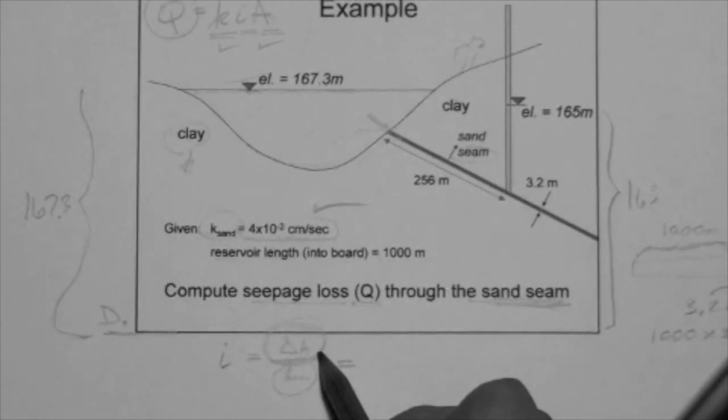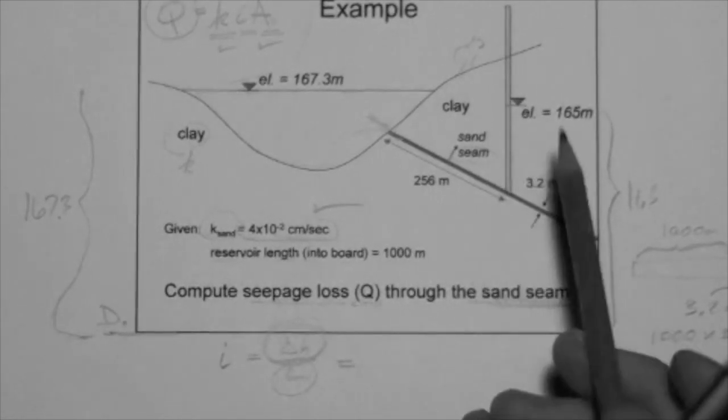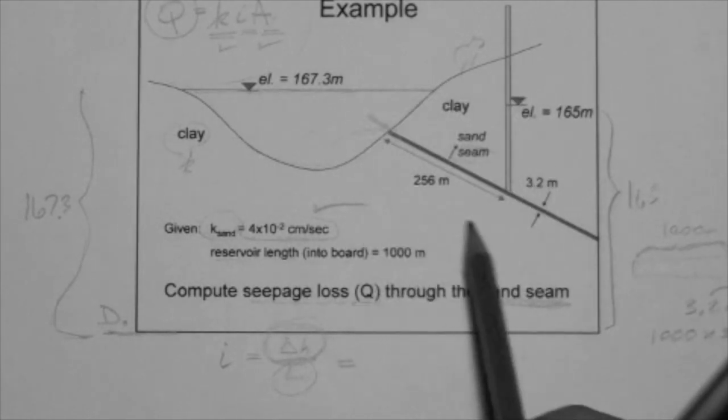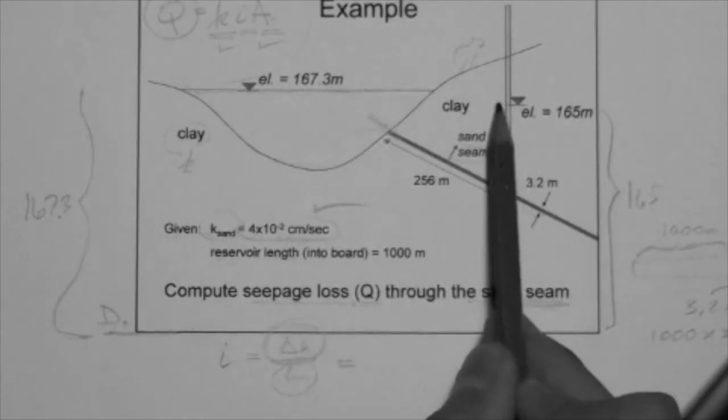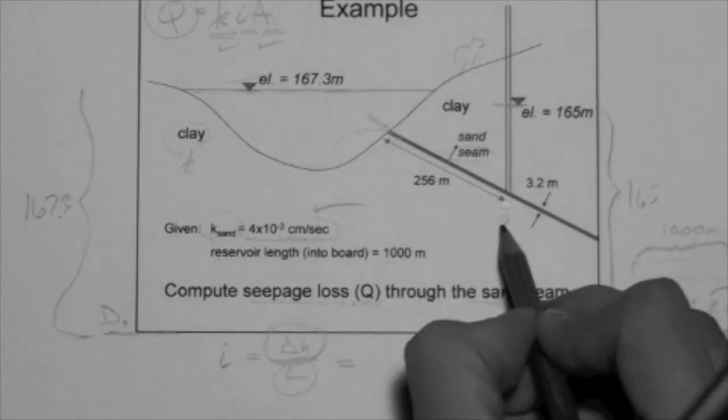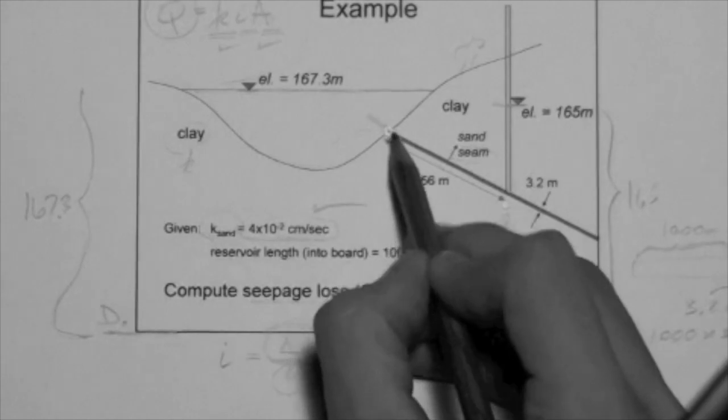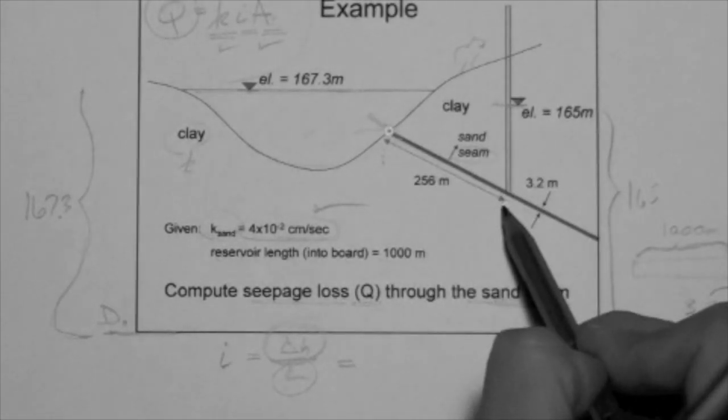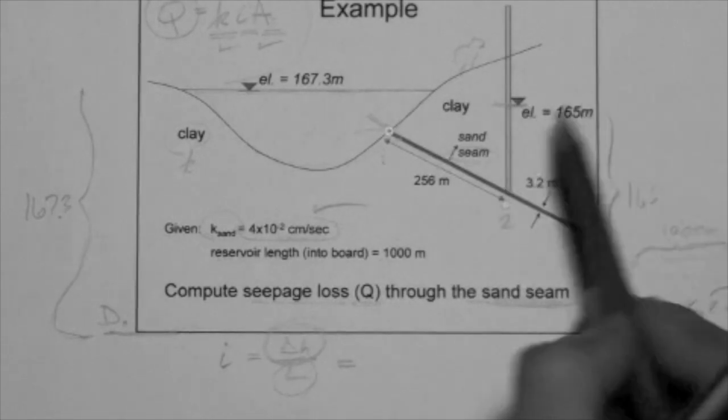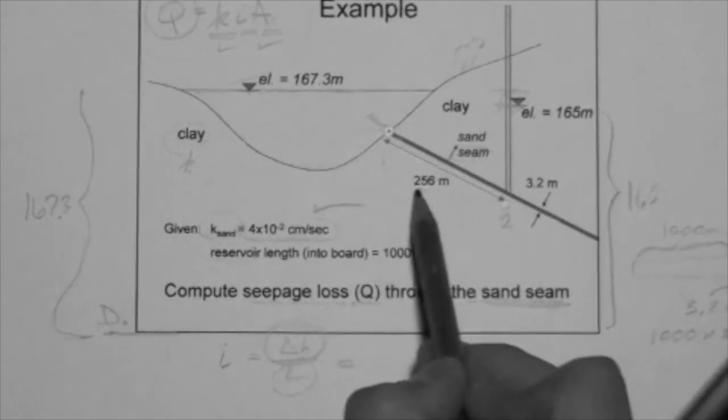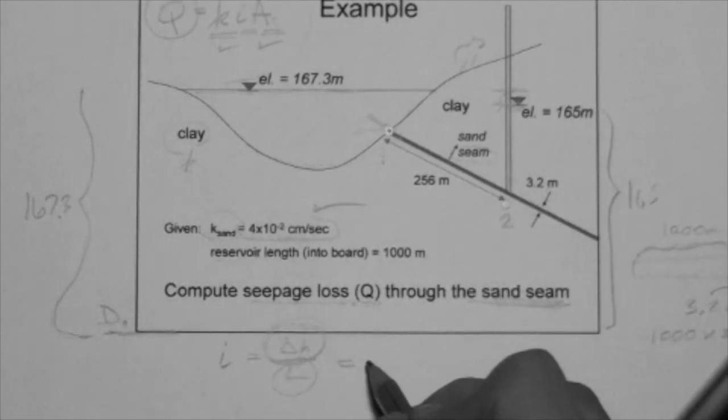So, delta H over L. We actually have somewhat of a Darcy setup here. As you can see, there's a water table here and a water table here. So the points in question are these two. One and two. What is the distance between those two points over which the head is lost? The distance is 256 meters, as shown here.